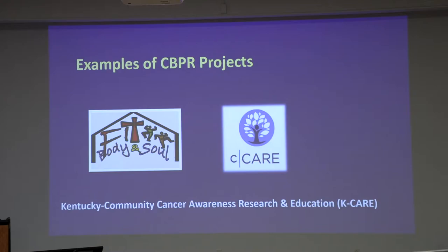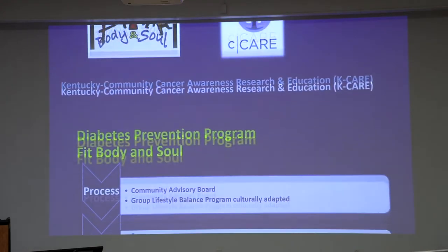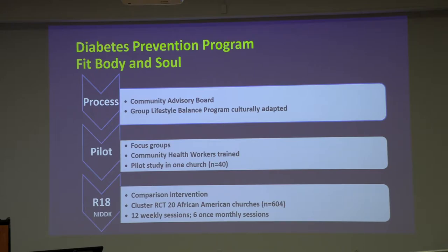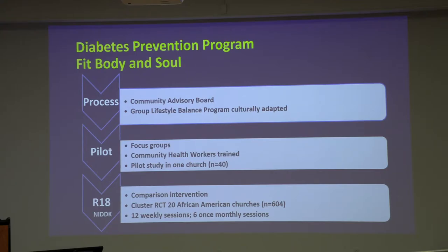Here are some examples of projects I've done. We'll start with one called Fit Body and Soul. Around 2010, for the first time, we learned that if individuals could lose 7% of their body weight, they could delay the onset of diabetes. That was a clinical trial done across 27 health centers across the nation, led by the University of Pittsburgh, called the Diabetes Prevention Program. But it was very clinically based, very resource intensive, and delivered by trained clinicians and interventionists.